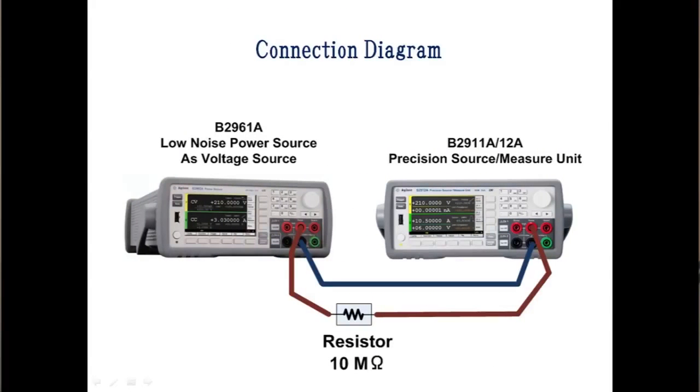Let's use voltage source with 10 mega ohm resistor at output to emulate device with large output resistance and measure voltage. This is the connection diagram. B2961A power source is used as voltage source and its high force terminal is connected to 10 mega ohm resistor, then high force terminal of SMU. Low force terminals of power source and SMU are connected directly.